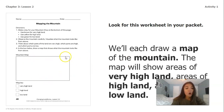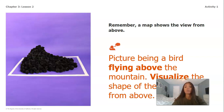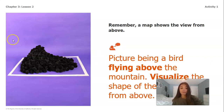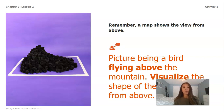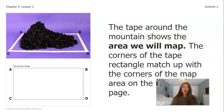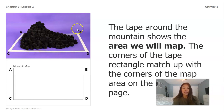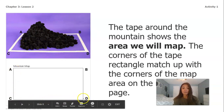In the box below we're going to draw a map that shows what the mountain will look like from above. Remember that a map shows the view from above — it's giving us that bird's eye view. Picture being a bird flying above the mountain model and visualize the shape of the mountain from above. You'll also notice that in the picture of the mountain model, there is tape around the edges. The tape around the mountain shows the area that we will map, and the corners of the tape rectangle match up with the corners of the map area on our notebook page.